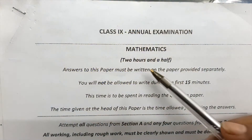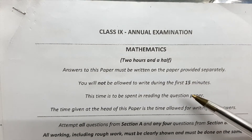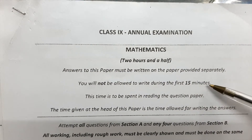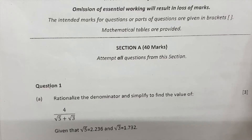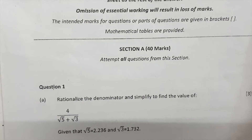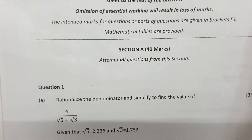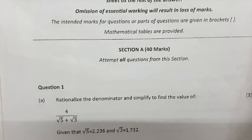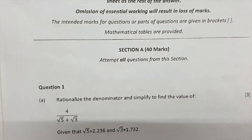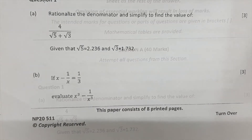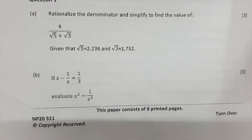The paper is for two and a half hours, with the first 15 minutes given to you to read thoroughly. We have two sections. Section A is 40 marks, with four questions each worth 10 marks — so questions 1 to 4 are 10 marks each. The marking scheme is mostly 3, 3, and 4 marks.